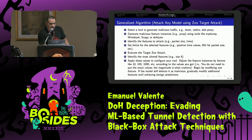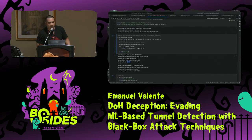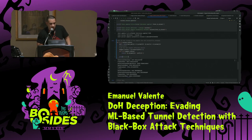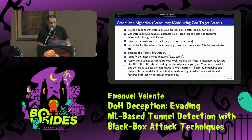Step six: identify the most altered features — like the top five — using absolute value. Here, the attack was able to successfully attack 22 instances, and the five most important features were identified. The last step is to apply these values to your tool.